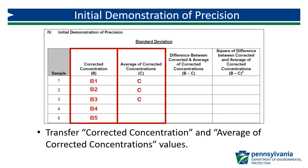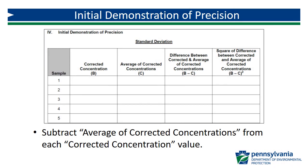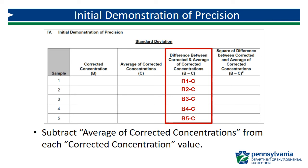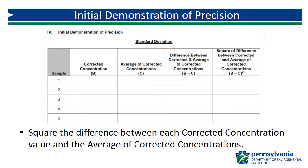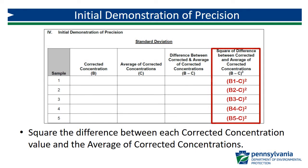Transfer the average of corrected concentrations value — this will be the same for each of the five rows. Subtract the value for the average of corrected concentrations from each of the individual corrected concentration values. Then determine the square of each value obtained for the difference between corrected and average of corrected concentrations by multiplying it by itself.